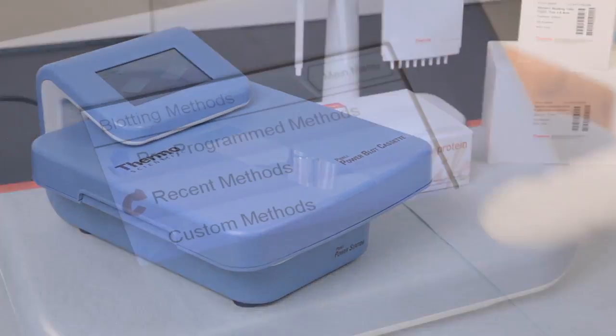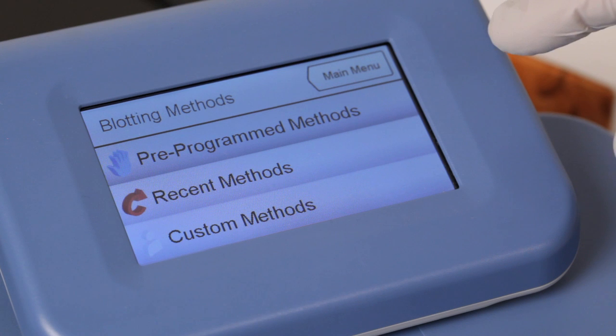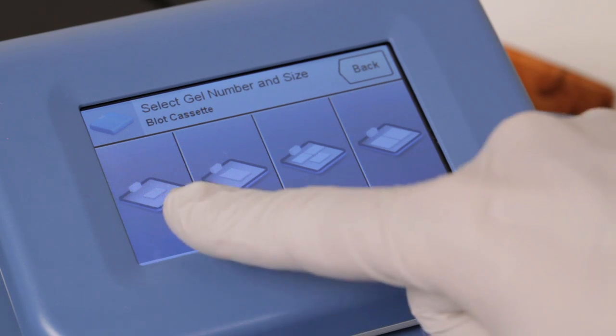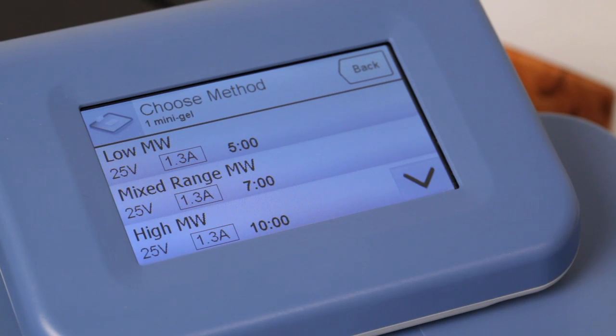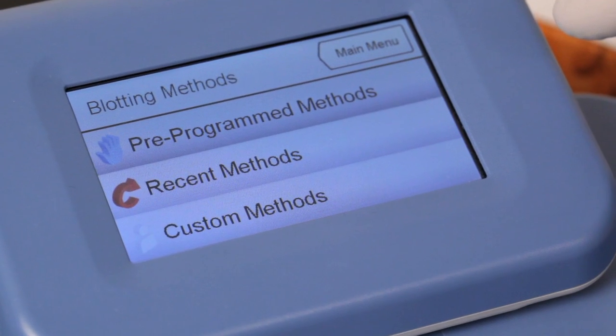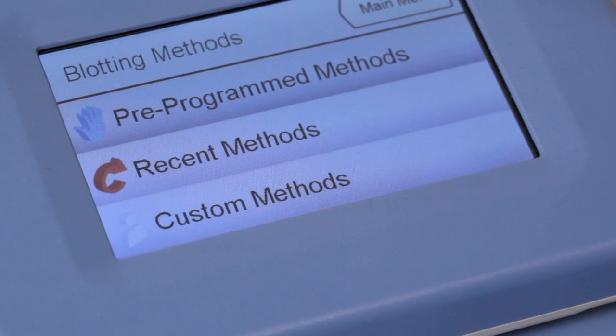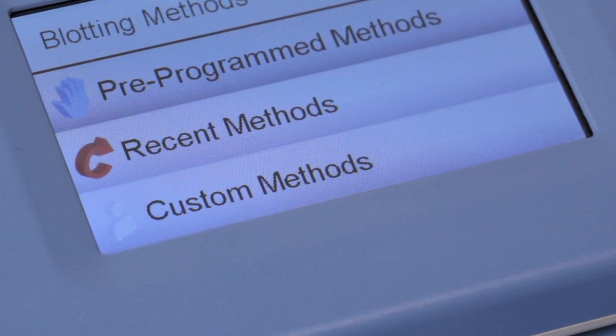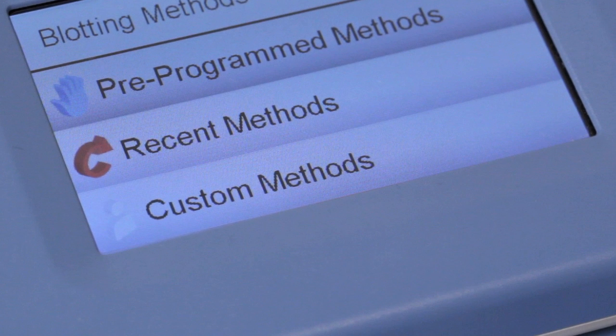The blotter comes with pre-programmed transfer methods that are based on the number of gels being transferred and the molecular weight range of your proteins of interest. These methods can be easily modified and saved, and custom methods can also be created. Recent methods are accessed from the main menu to quickly begin commonly used transfer methods.